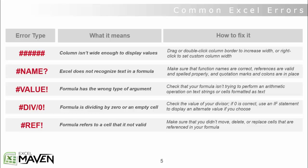Next up, DIV/ZERO. This one speaks for itself — you're trying to divide by zero or by an empty cell. Just check the value of your divisor. And like I mentioned, zero might be the correct number, so there's nothing wrong. You can either keep the DIV/ZERO error there, or you can use an IFERROR statement to display an alternate value if you choose to do so. I'm going to show you a quick example of how to do that in just a moment.